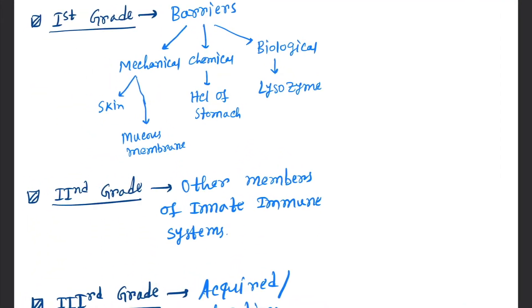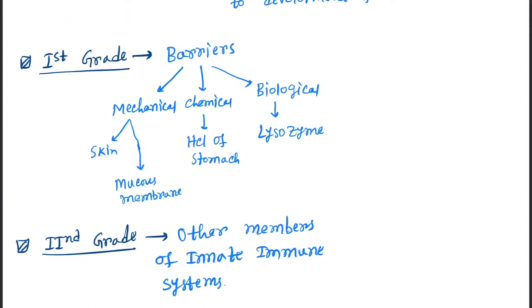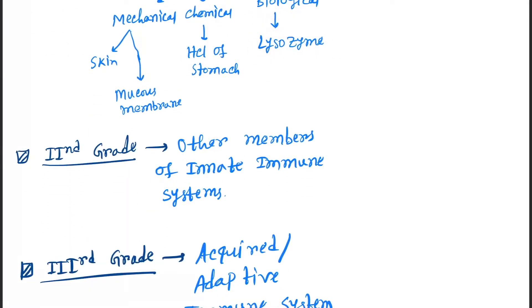Now the body provides immunity by mainly three grades. First grade immunity is provided by the barriers, and the barriers are mechanical, chemical, and biological. Mechanical barriers example: skin, mucus membrane. Chemical: HCl of the stomach. And biological is lysozyme produced by cells.